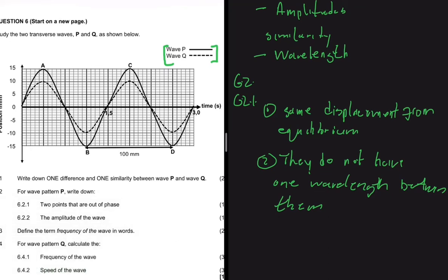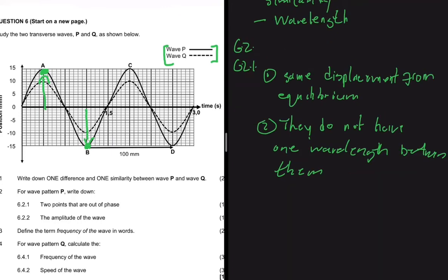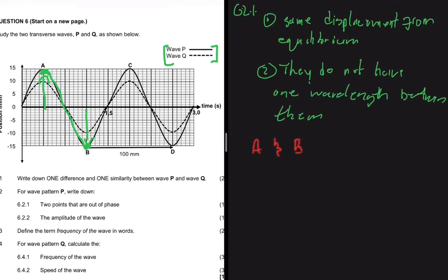So let's look at the points to determine which are out of phase. Points A and B have the same displacement from equilibrium — just in opposite directions — but they don't have one wavelength between them. From A to B is only half a wavelength. So A and B are two points that are out of phase.